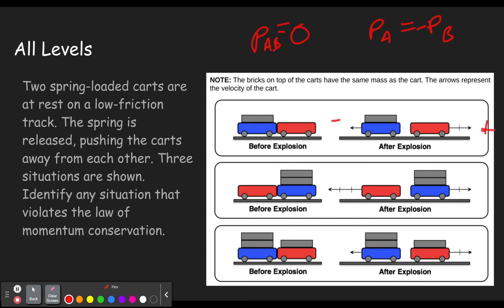The bricks on top of the carts have the same mass as the cart, so this one has two times the mass and this one has one times the mass. The velocity here is one, and this little line means two segments, so this has a velocity of two. Momentum is mass times velocity: two times one gives two, and one times two also gives two. So that one is good — momentum has been conserved. It started out with zero; one has negative two and the other has two, so the total momentum is still zero. Remember, momentum is a vector.